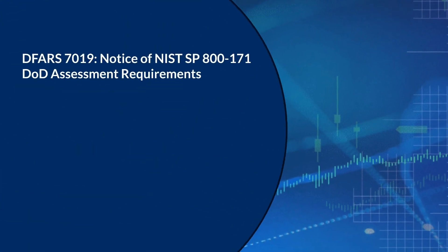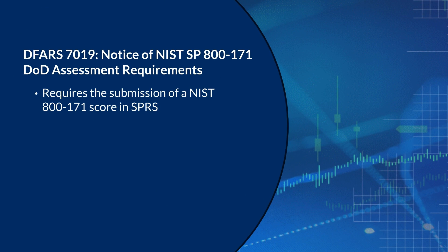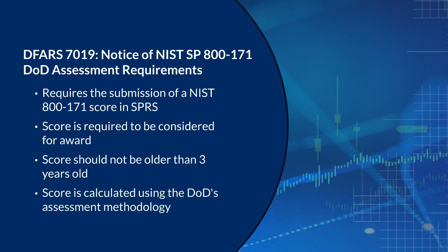DFARS 7019 requires that contractors submit a NIST 800-171 score into SPIRS. A score must be submitted to be considered for contract award, the score must be less than three years old, and the scores are calculated using DOD's assessment methodology.